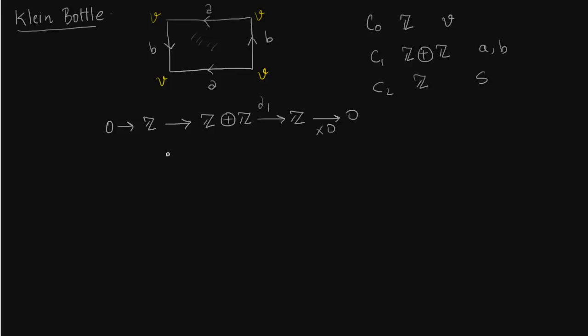So we want to find delta 1. Delta 1 of A is just V minus V which is 0. This is same as delta B. So the kernel of the map is the entire Z².